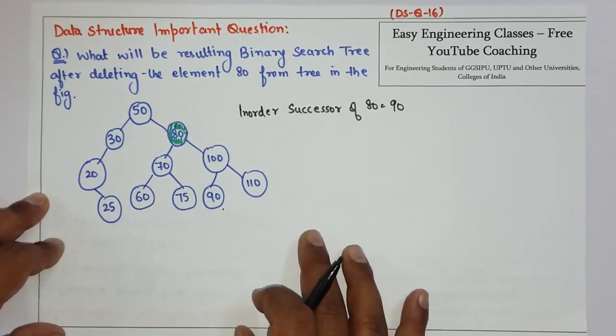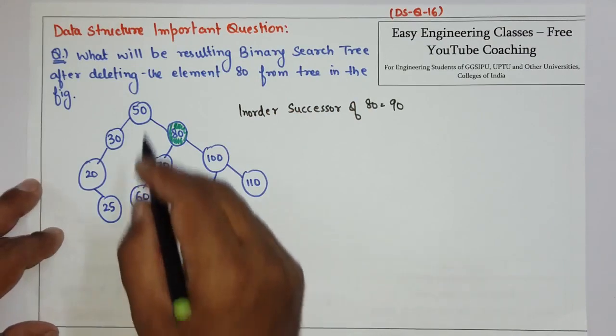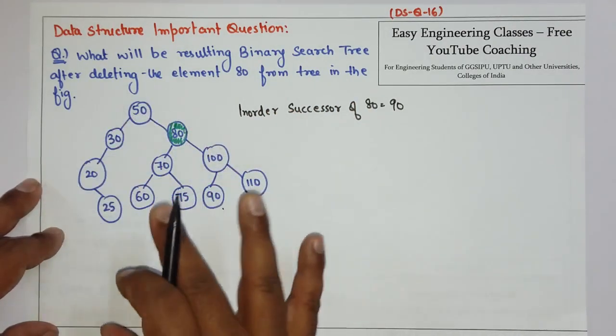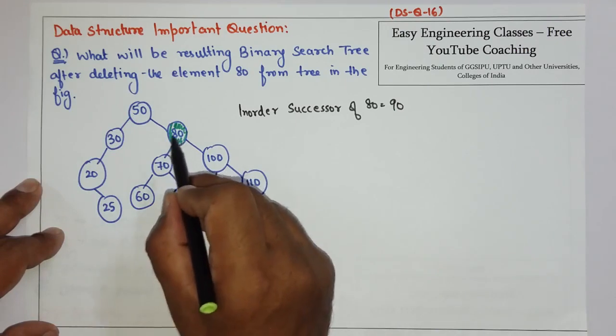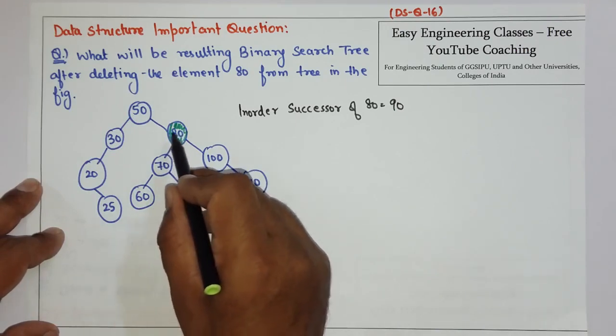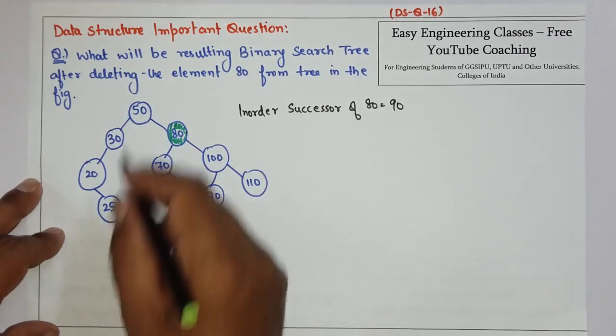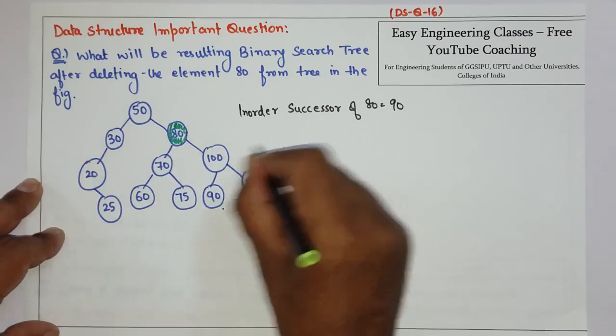Now there is one more method of finding the inorder successor, and that is to find the inorder traversal of this complete tree and see which element is occurring just after this particular node 80. So let me write the inorder traversal of this particular tree.